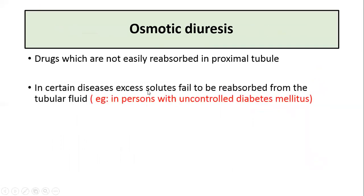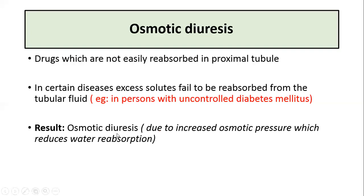Certain diseases where excess solutes fail to be reabsorbed from the tubular fluid can also cause osmotic diuresis — for example, uncontrolled diabetes mellitus. In uncontrolled diabetes mellitus, plasma glucose concentration is high, which increases the filtered load of glucose, exceeding the tubular maximum for glucose, so glucose is not completely reabsorbed. This causes a marked increase in osmotically active particles in the tubular lumen, raising osmotic pressure, which reduces water reabsorption and causes diuresis.